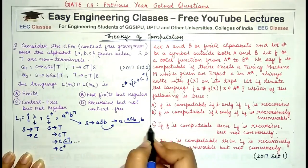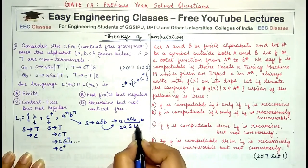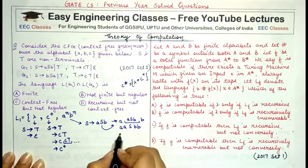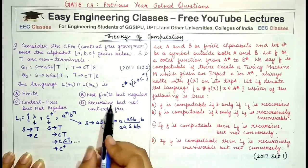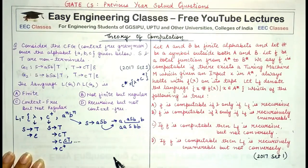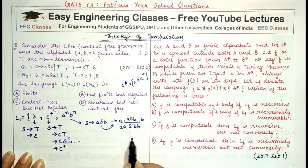I get double a, S, and double b. Whenever S is replaced by another aSb, a new pair of a and b is included around the previous ones. This string always goes as some number of a's followed by S followed by an equal number of b's.